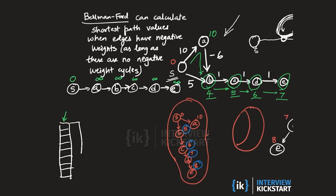In the next iteration we fill in the values in the next column — the shortest path values from the source to each vertex using at most one edge. For vertex a, the shortest path value using at most one edge is just the weight of the edge from s to a: we take 0 and add 10, giving a shortest path value to a of 10 using at most one edge.